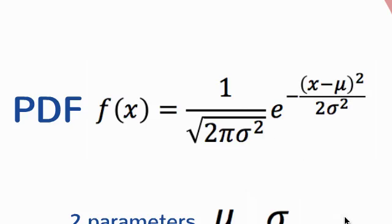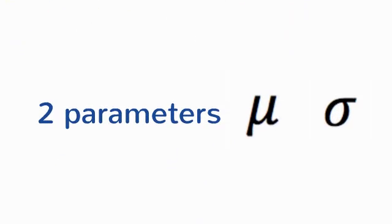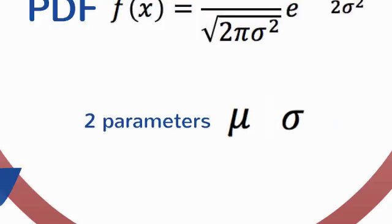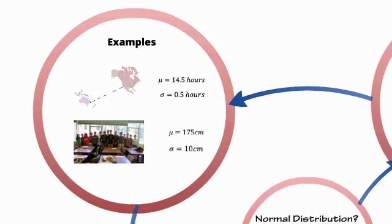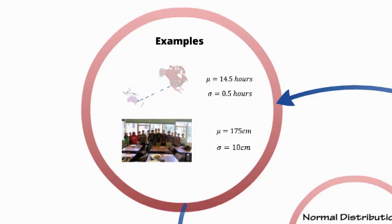In this equation, there's only really two parameters. Mu being the mean, or the middle of the distribution, and sigma being the standard deviation, the spread. So, where does this bell-curve pop up in real life? Let's have a look at some examples.